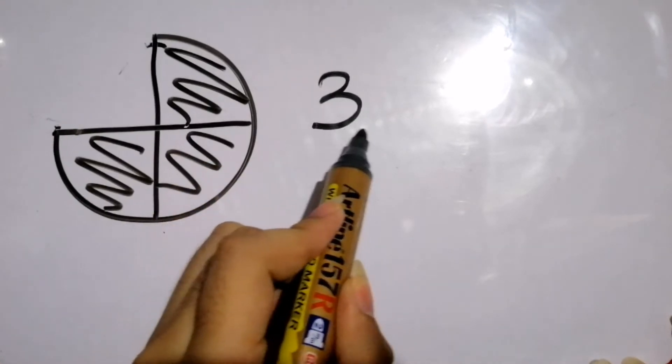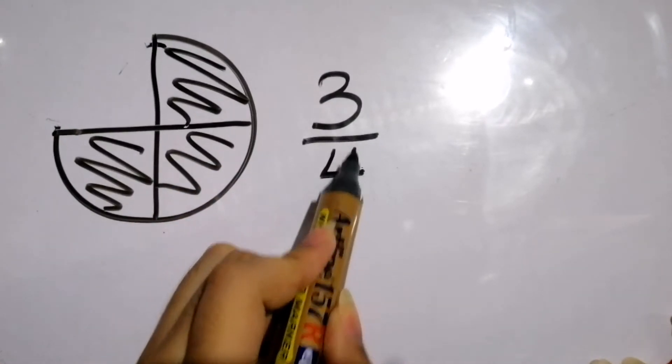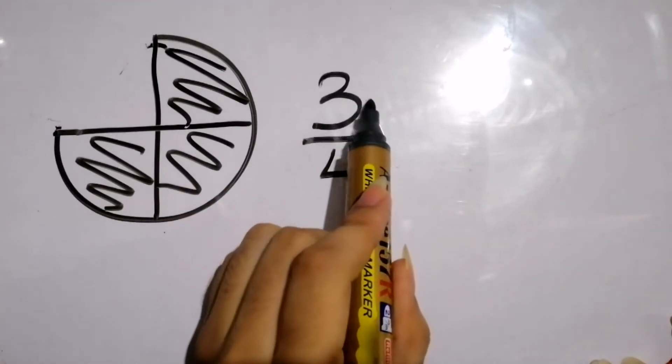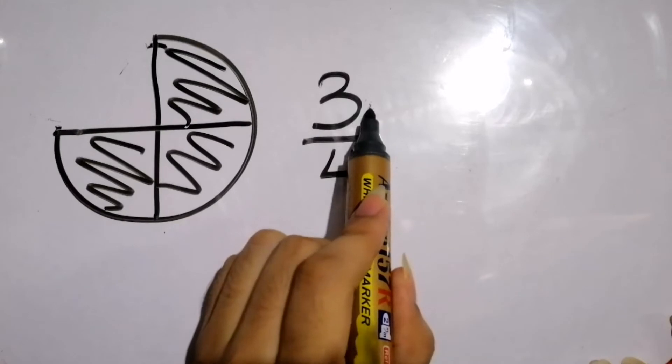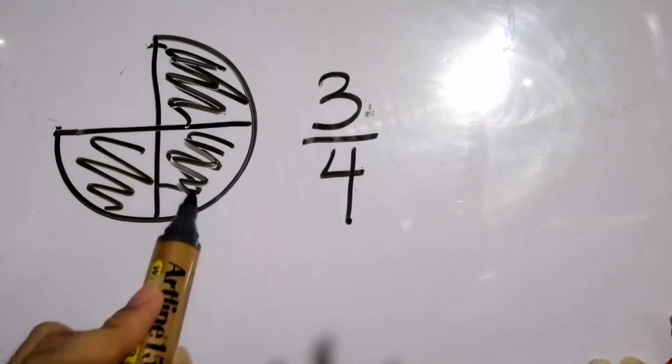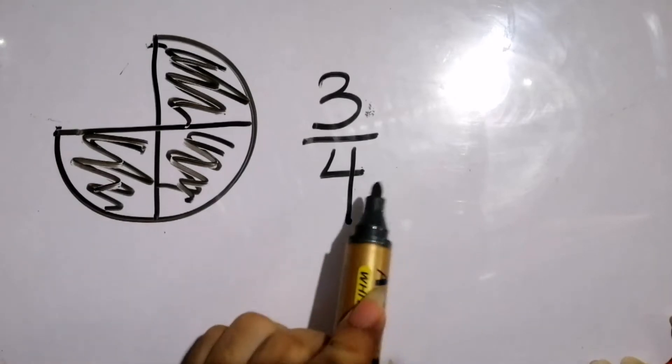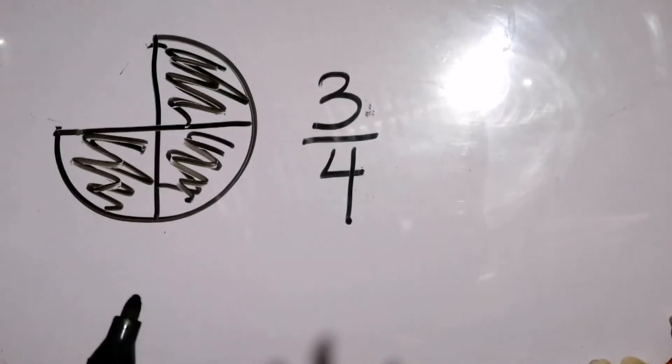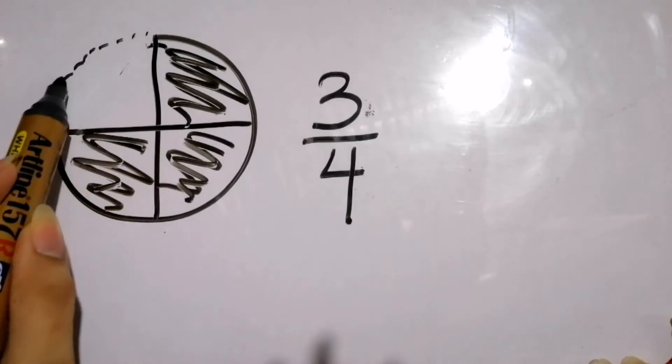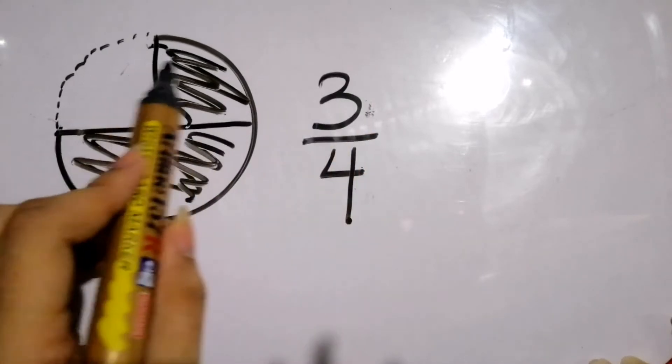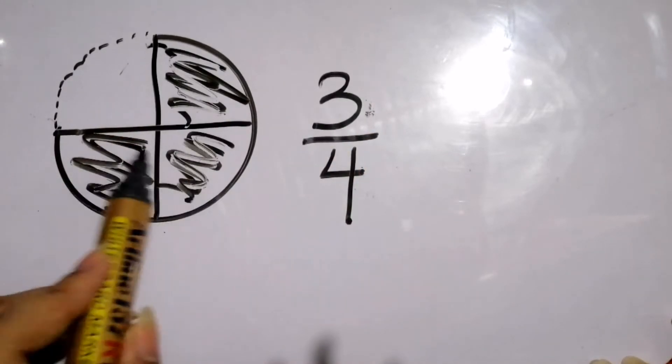Which is three out of four, or three over four, wherein three tells you how many parts you considered. Here we considered three slices which were left, and four tells us how many parts the whole was divided into equally. Here it was divided into four equal parts, so three-fourths represents this portion which was left in your pizza.